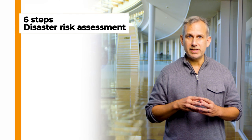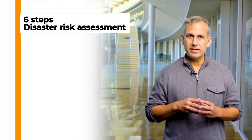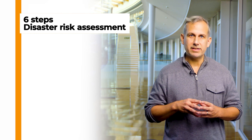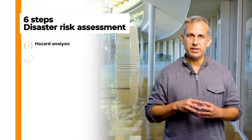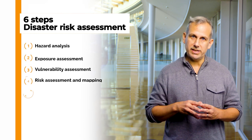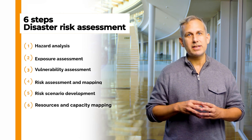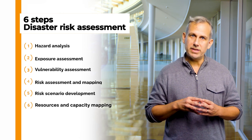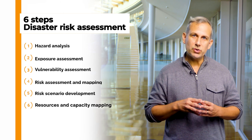This step concludes the disaster risk assessment process and ends part two of the course. We introduced the six key steps to assess risks considering compound and cascading disasters: step one, hazard analysis; step two, exposure assessment; step three, vulnerability assessment; step four, risk mapping; step five, risk scenario development; step six, resources and capacity mapping. In the next lesson, we will learn about designing resilience enhancement measurements that could help reduce the identified disaster risks.